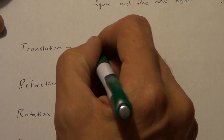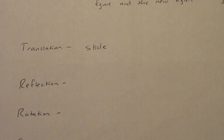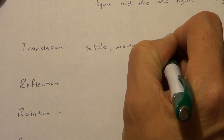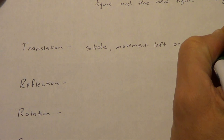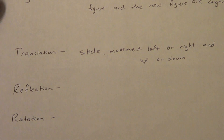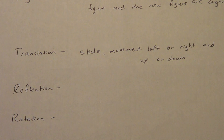Translation — another word for that might be a slide. If I took something and slid it, it's basically a movement left or right, and up or down. We might just go left, or right, or just up, or just down. When we say up, down, left, and right, we're usually talking about on a plane. In lesson 4.9, which is the next lesson, we're going to look at it on a graphing plane.